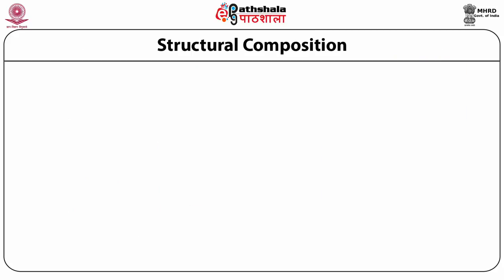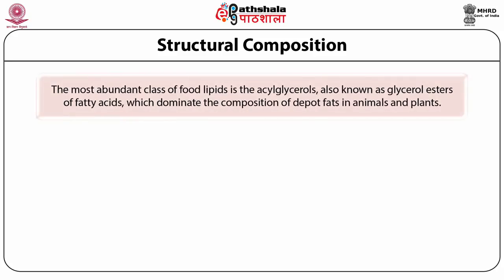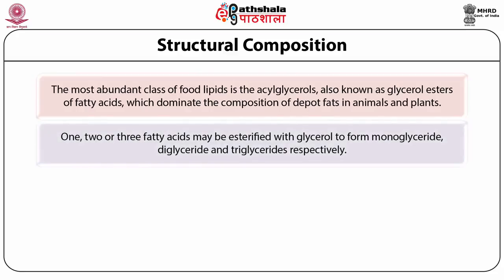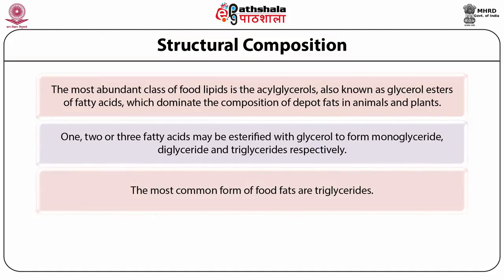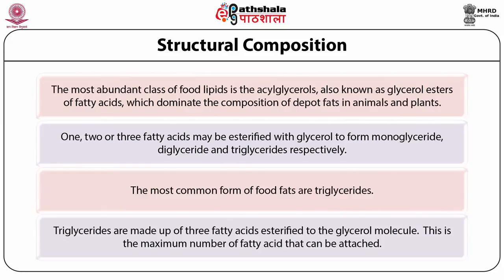Regarding structural composition of fats and oils: the most abundant class of food lipids is acylglycerols, also known as glycerol esters of fatty acids, which dominate the composition of depot fats in animals and plants. One, two or three fatty acids may be esterified with glycerol to form monoglyceride, diglyceride and triglycerides respectively. The most common form of food fats are triglycerides, which are made up of three fatty acids esterified to the glycerol molecule — the maximum number of fatty acids that can be attached.